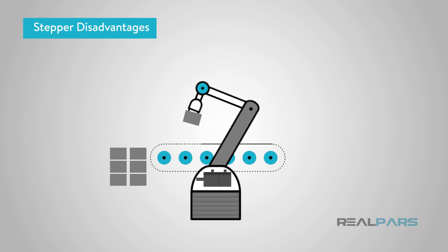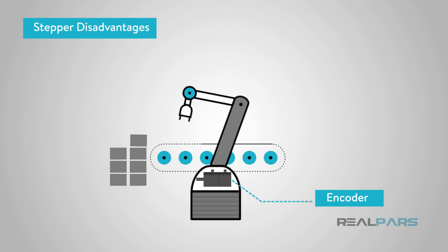For this reason, more complex robots and machine tools will utilize servo motors that incorporate encoders and closed-loop controllers.